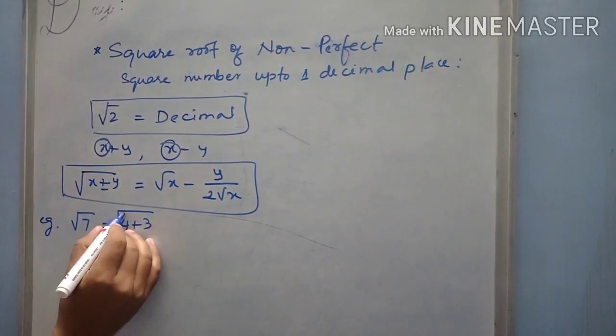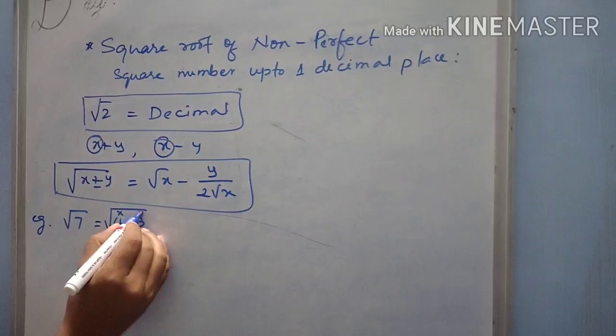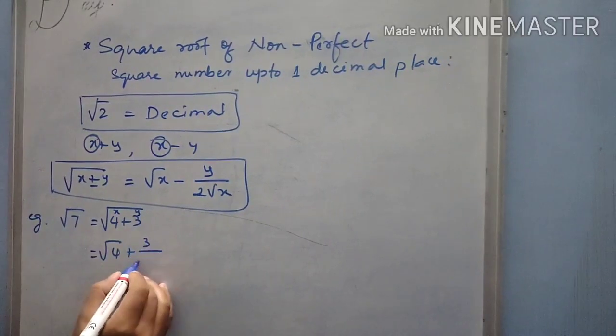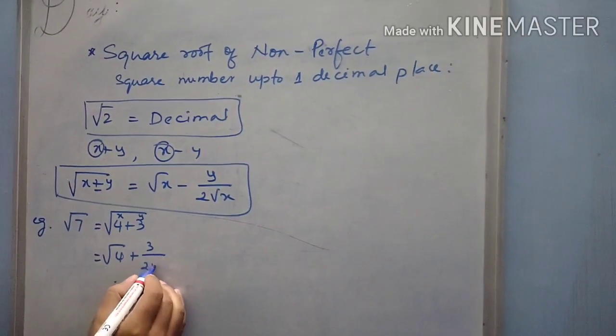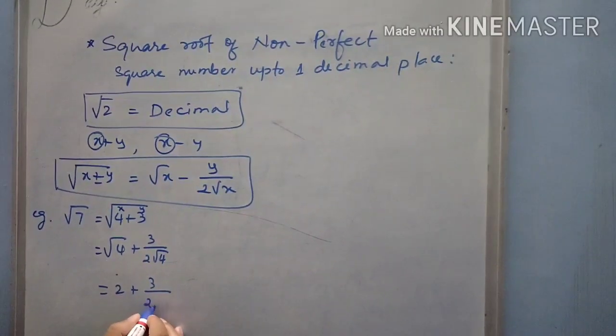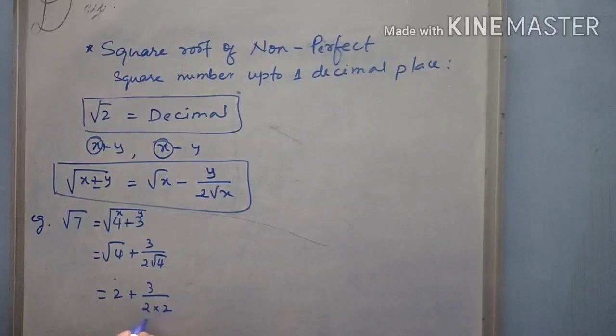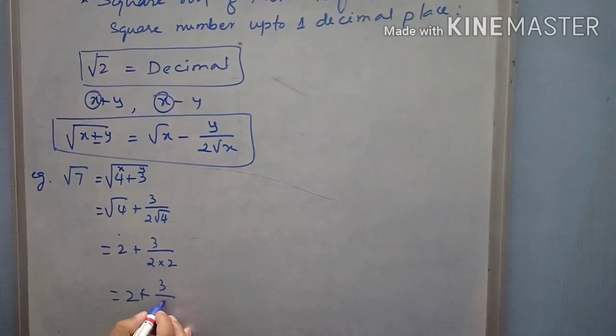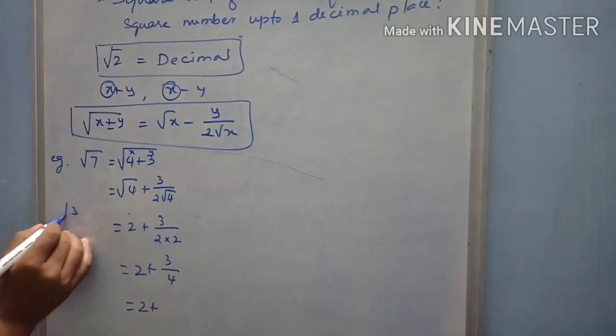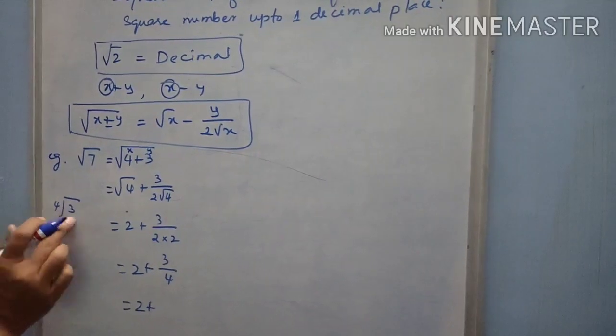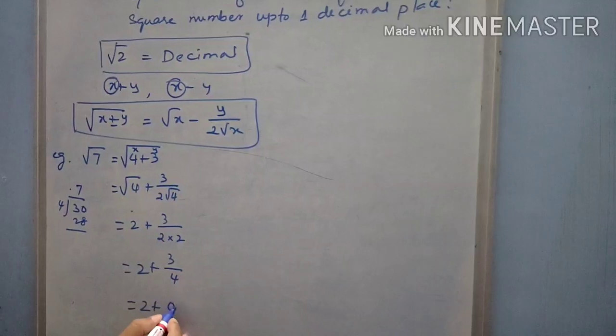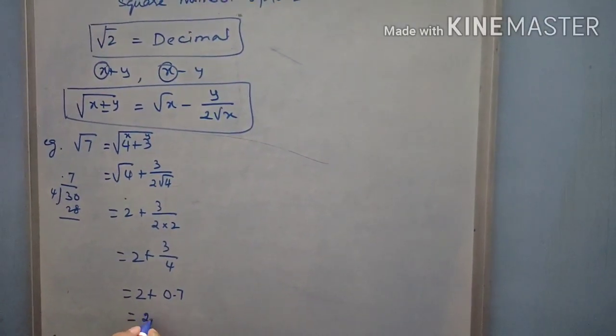Square root of x. Here, 4 is x, 3 is y. So now, square root of 4 plus 3 by 2 root x. Root x is root 4. So now square root of 4 is 2 plus 3 by 2 into square root of 4 is 2. 2 plus 3 by 4. Now, 2 plus 3 divided by 4. If 3 is divided by 4, we will get, so now 4 is bigger. We have to put the point. 4 sevens are 28. I will get 0.7 something.